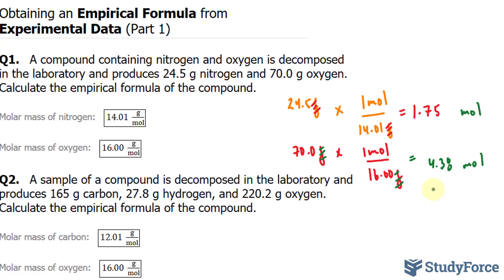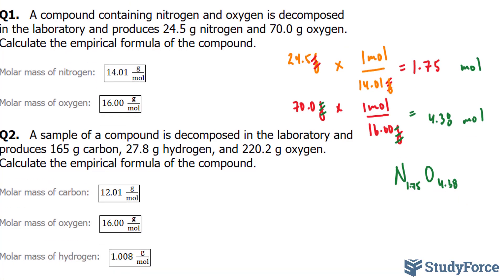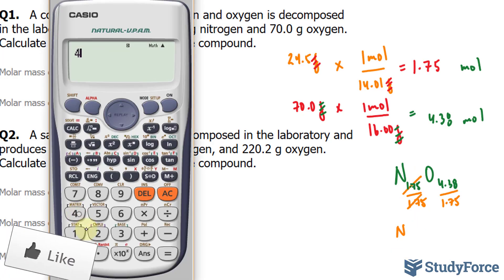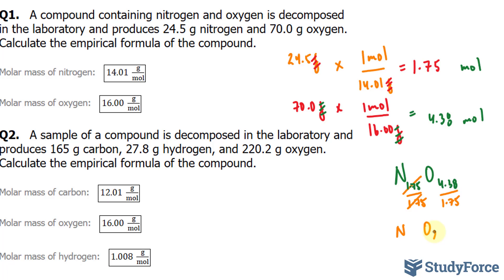So we have a chemical that consists of nitrogen and oxygen. So I'll write down NO. And we have 1.75 of nitrogen and 4.38 of oxygen, moles. Now if we want to reduce this, I'll take the smaller of the two and divide the subscripts by that number. So I'll take 1.75 divided by 1.75. This cancels out, becomes a 1. So we have NO, no need to write the 1. And over here we have 4.38 divided by 1.75, that gives me roughly 2.5.